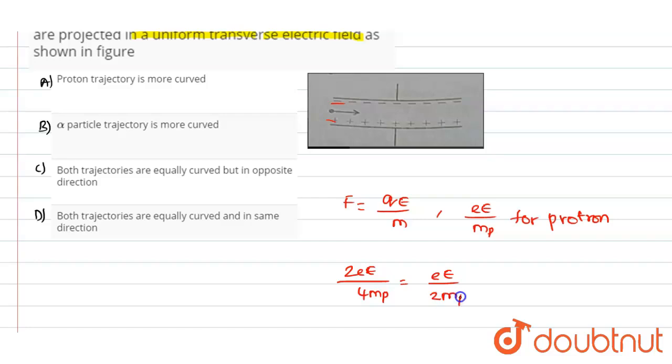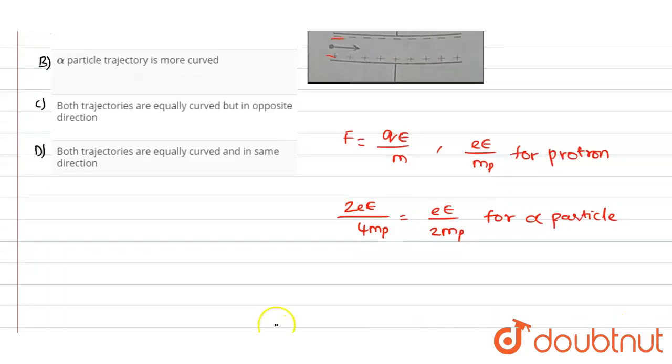2mp. So this is for the alpha particle. Here, capital E is electric field, q is charge, and mp is the mass of one proton. As they are